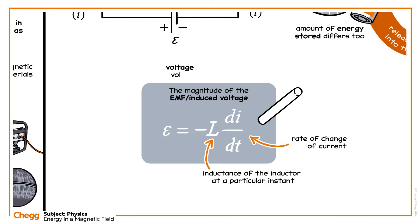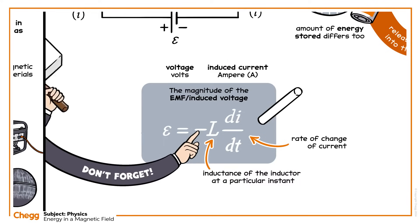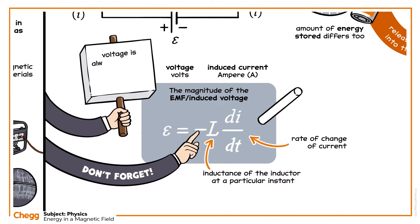Voltage is measured in volts. Inductance is measured in henries. Current is measured in amperes. Don't forget the minus sign, which indicates that induced voltage is always opposite to the rate of change in the current.